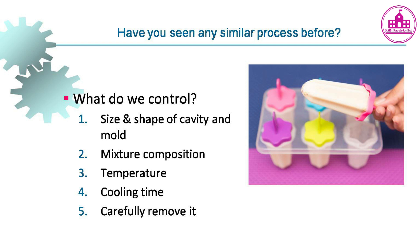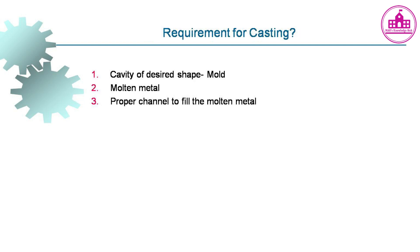In casting, we control the size and shape of the cavity and mold, the mixture composition, temperature, and cooling time, then carefully remove the casting. The basic requirements for casting are: a cavity of desired shape in a mold, molten metal, and a proper channel to fill the molten metal.